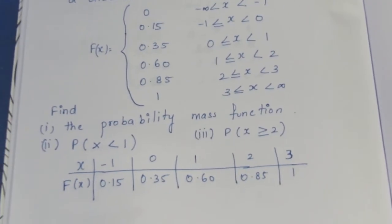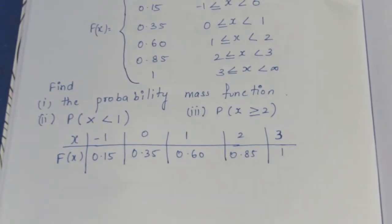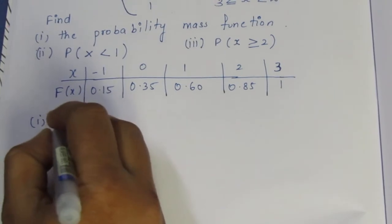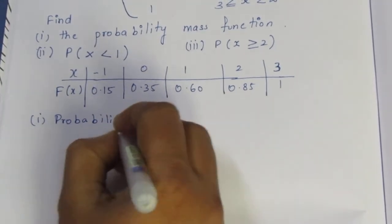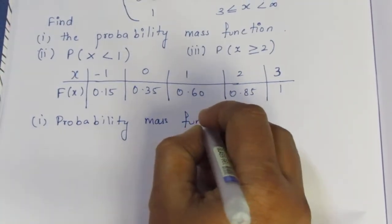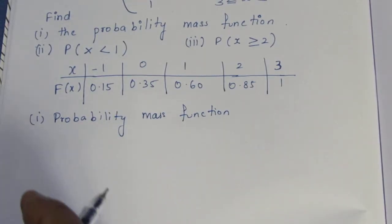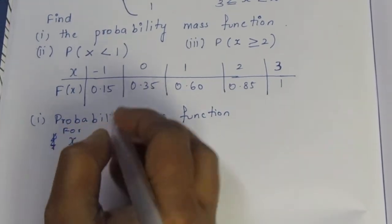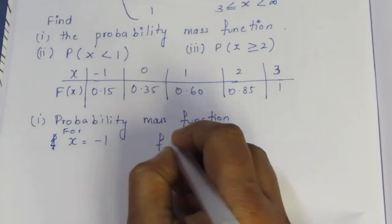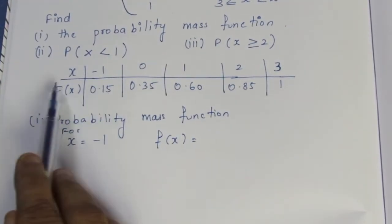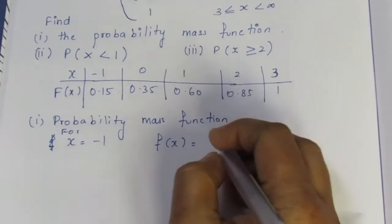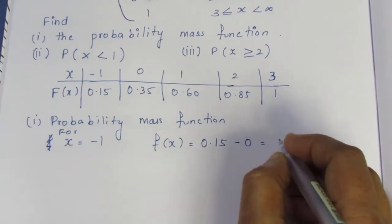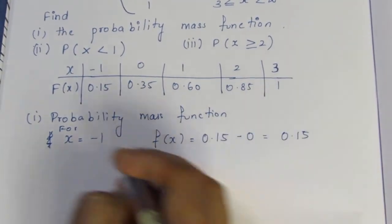These are our CDF values. Now, what we should do is sum up using the probability mass function — small f of x. For x equal to minus 1, f of x is defined as F(-1) minus F(value before -1), which is 0.15 minus 0. So f(-1) = 0.15.